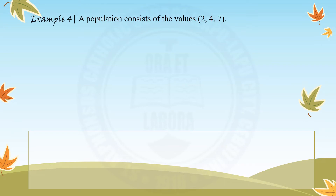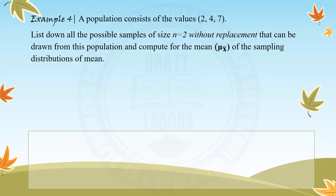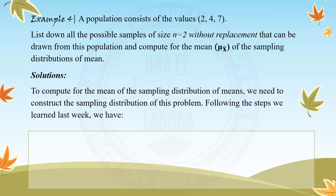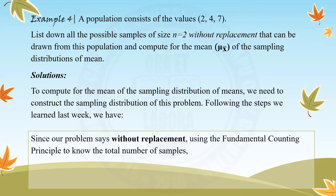For this example, a population consists of the values 2, 4, and 7. List down all possible samples of size n = 2 without replacement — meaning from the population having 3 values, we will take 2 values as our sample size — and compute for the mean of the sampling distribution of means. We use the fundamental counting principle: 3 times 2 equals 6 possible observations.